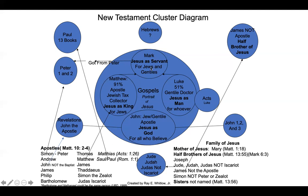Mark was not an apostle. He accompanied the apostles, but he himself was not an apostle. When he wrote the book of Mark, he wrote it from the perspective of Jesus as a servant, and he wrote it for Jews and Gentiles. The next gospel is Matthew. Matthew got 91% of his information from Mark, and of course Matthew was an apostle — a Jewish tax collector — who wrote the gospel looking at Jesus as king, primarily for Jews.